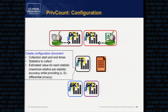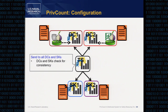Once our deployment is set up, we can do several different measurement periods. Each measurement period starts with a configuration phase. We create the deployment once and do multiple measurements from there. The configuration document contains information specific to a single measurement phase: when to start collecting data from Tor, when to end, which statistics to collect, and estimated values for each statistic used to maximize relative accuracy while providing differential privacy. This document is sent to all nodes, and each data collector and sharekeeper checks it for consistency to make sure they have the same non-outdated version. Once the consistency check passes, we proceed to measurement.